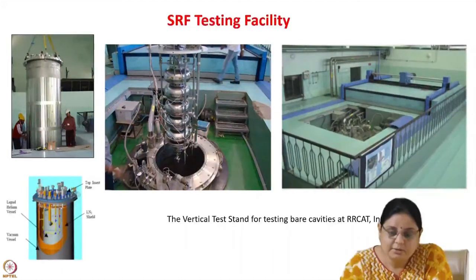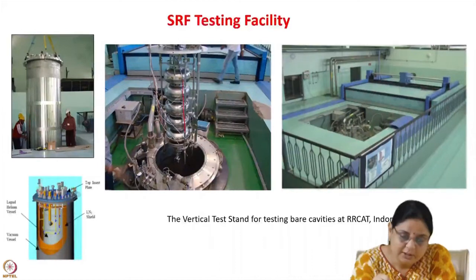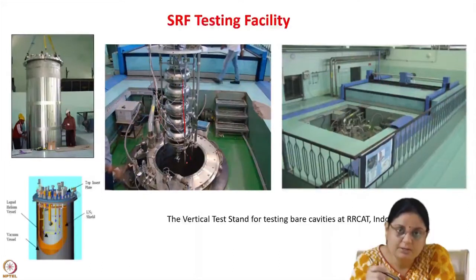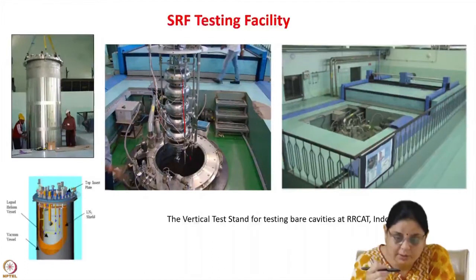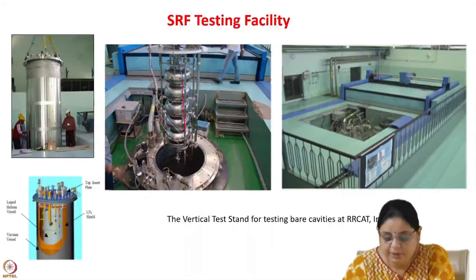The testing facility is also separate. This is a vertical test stand at RRCAT. You can see the elliptical cavity being inserted inside the cryostat, which will be filled with liquid helium — requiring huge quantities of liquid helium and a large cryo plant. The cavity is dipped inside and tested before jacketing. These are pictures of the vertical test stand for testing bare cavities at RRCAT.